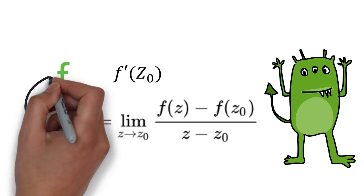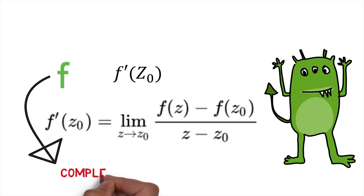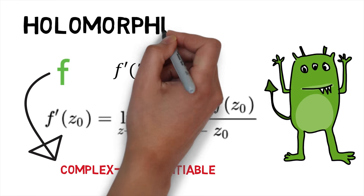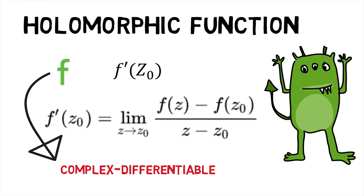If f is complex differentiable at any point z0 in an open set u, we say that f is holomorphic on u.